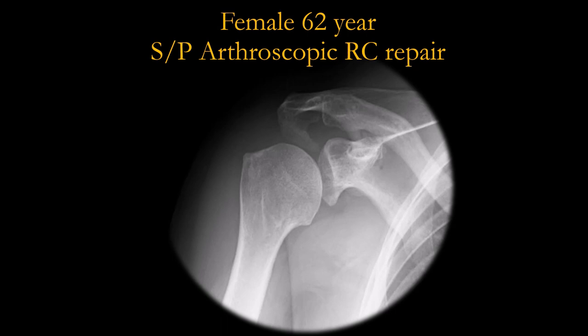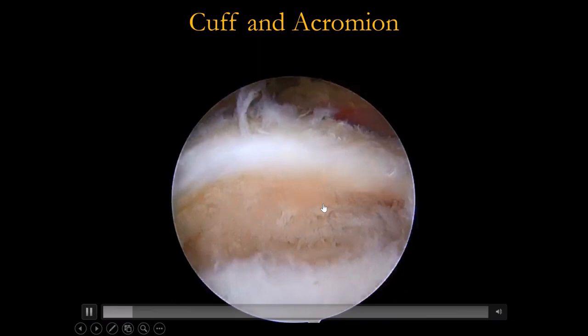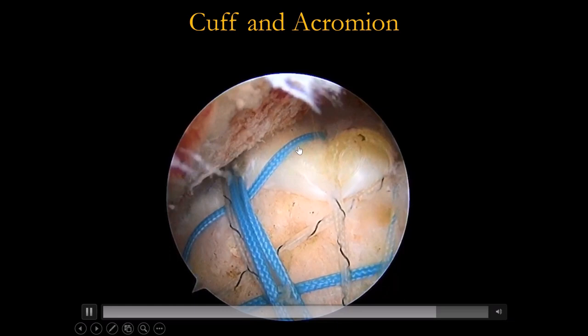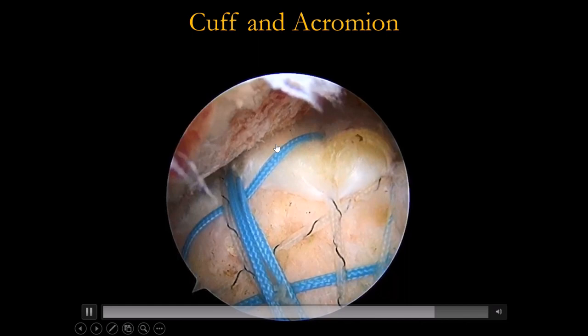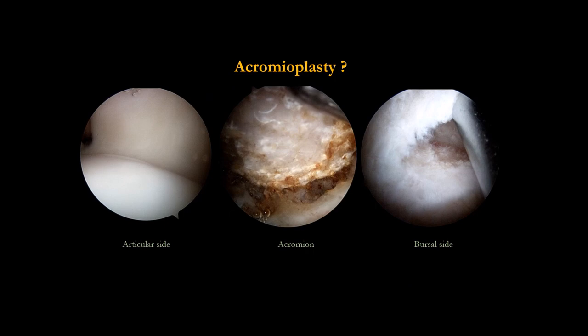Second case: 62-year-old after arthroscopic rotator cuff repair. The first surgeon did not decompress a large acromion spur. We went in, removed the acromion spur, and repaired the rotator cuff again. The acromion was very close to the rotator cuff — with an irregular acromion, you can see from the video that it could re-tear. You need to smooth the acromion.